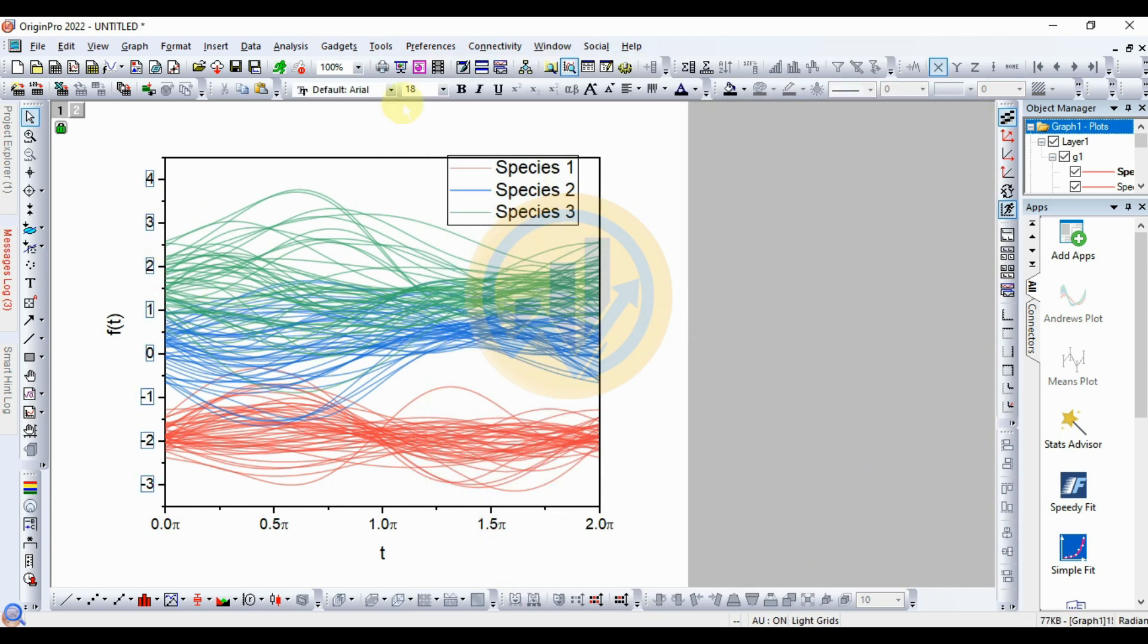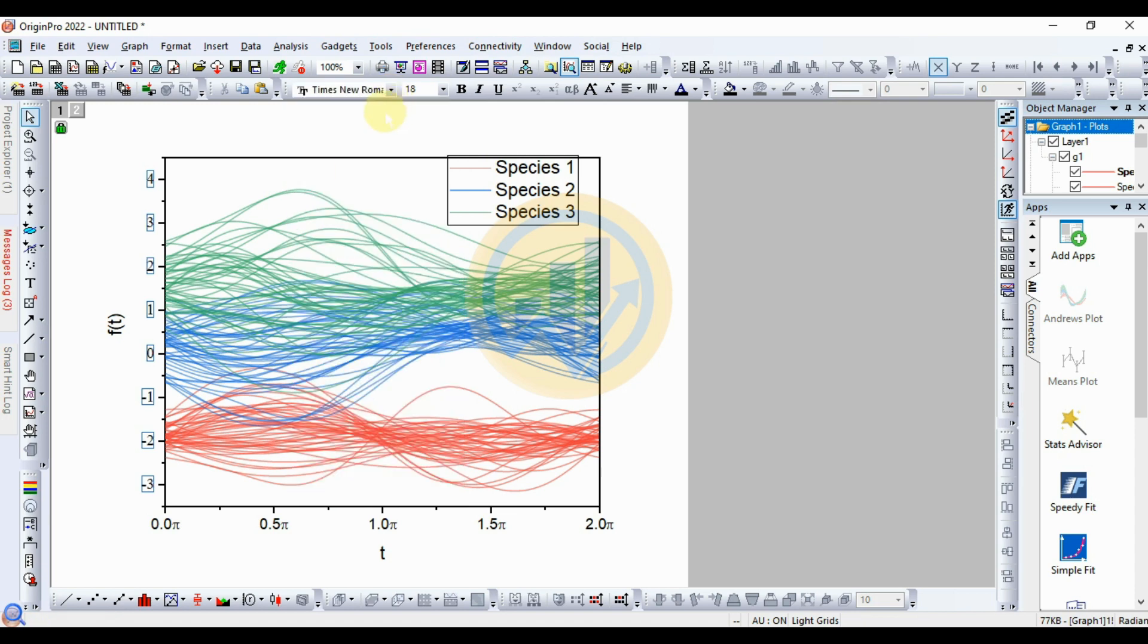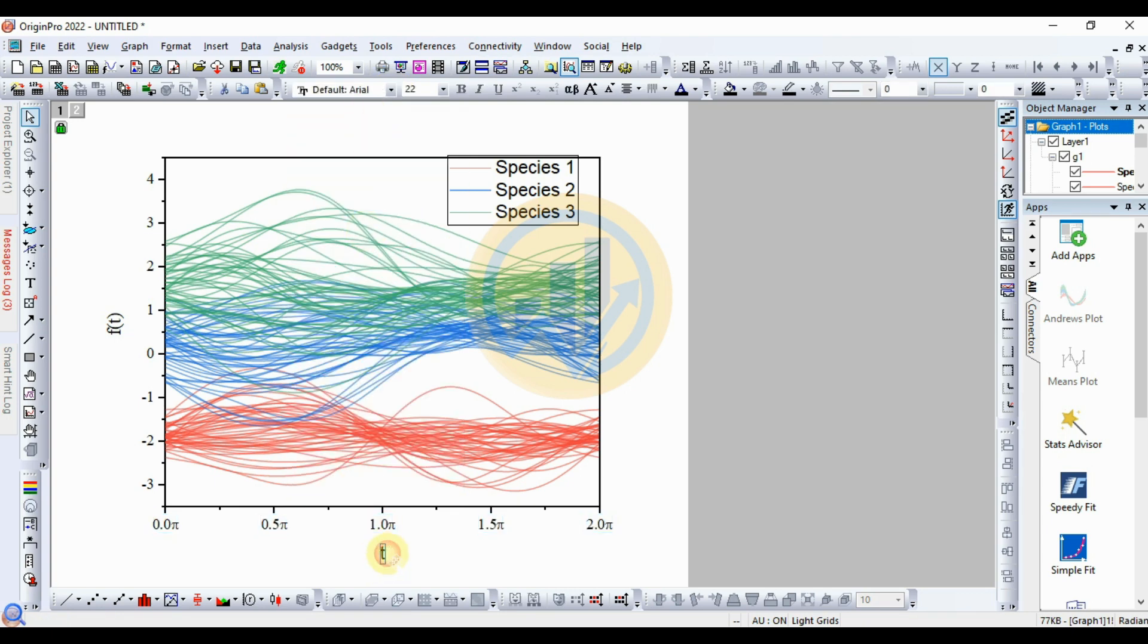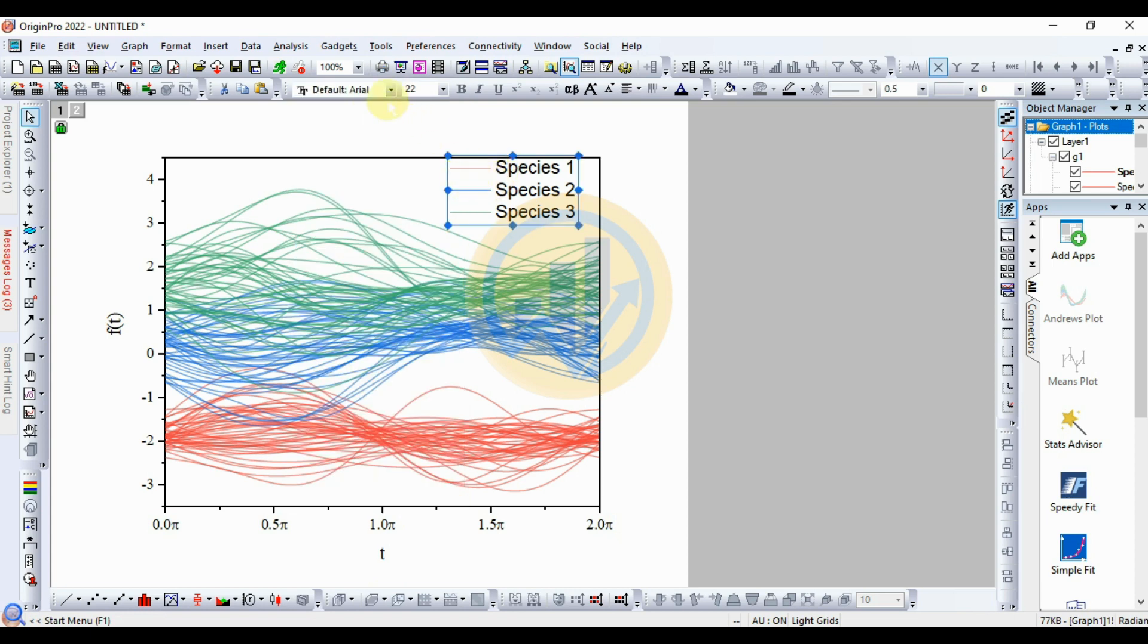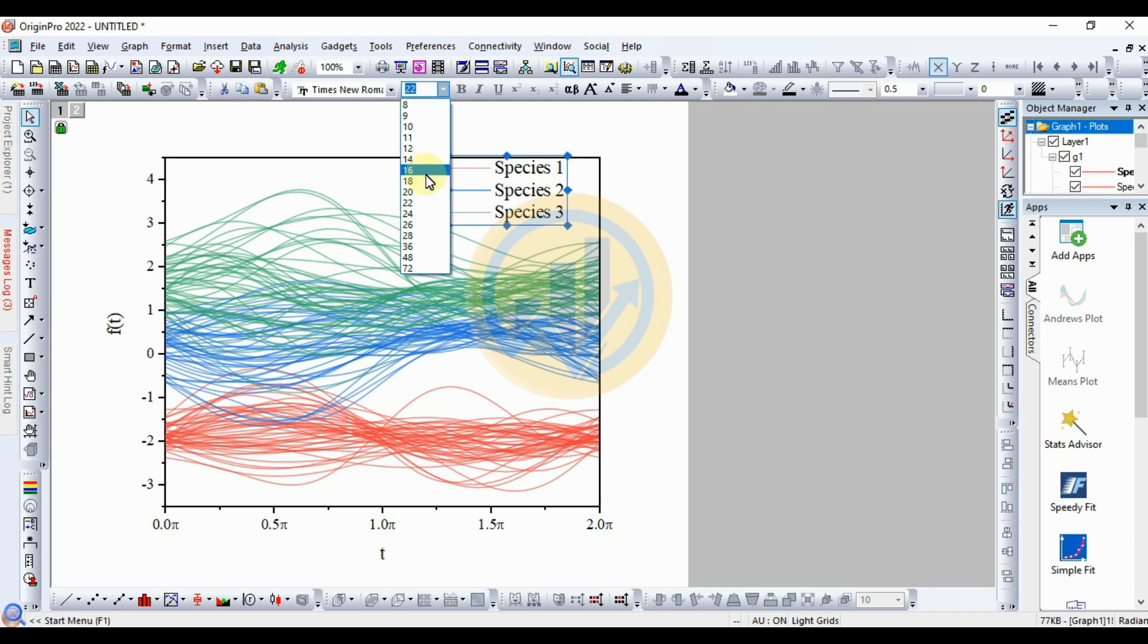Now change the font options. Select Times Roman. And f(t) also changed to the font. Change the axis layer font. And the species legend also changed to font size 18.